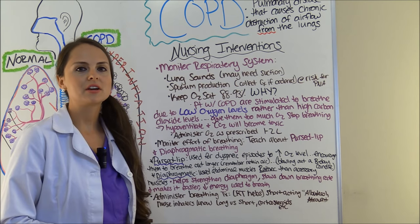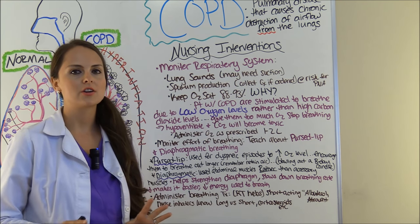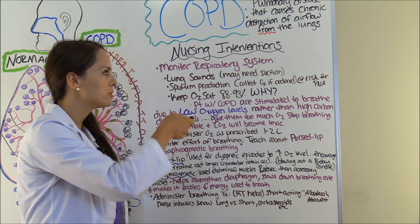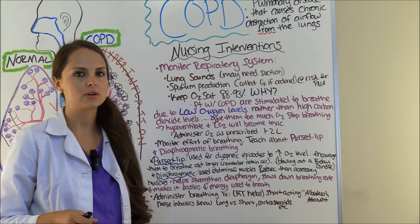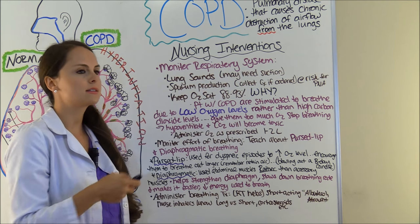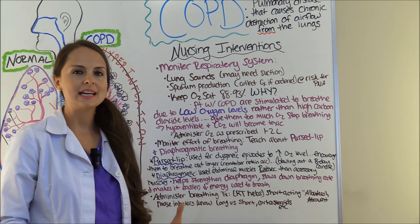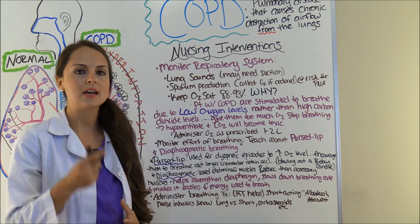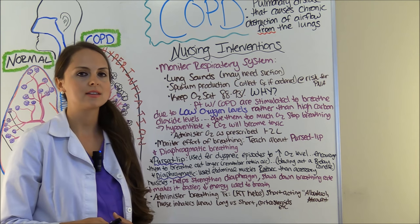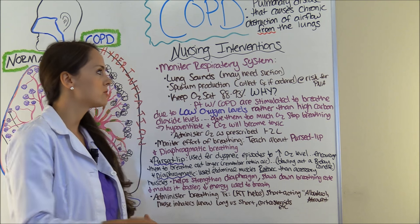Let's start out talking about the nursing interventions — what are you going to do for this patient as the nurse? Number one, the most obvious is that you are going to monitor their respiratory system, which will include listening to those lung sounds. If they need suction, they may need nasotracheal suction. You'll assess their need for that based on their effort of breathing and their oxygen saturation.